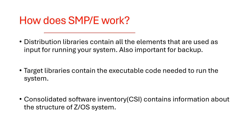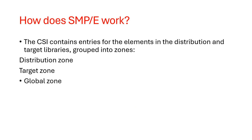How does SMP work? SMP contains information about the structure, content, and modification status of the software. The distribution library contains all elements such as modules and macros used as input for running your system. One very important use of the distribution library is for backup — if a serious error occurs with an element on the production system, the element can be replaced by a stable copy found in the distribution libraries. The target library contains the executable code needed to run on the system. The CSI, or consolidated software inventory, contains information about the structure of the z/OS system and contains entries for elements in the distribution and target libraries, grouped into zones.